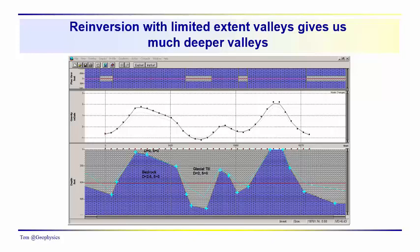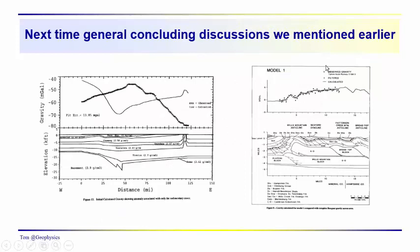And this is just an illustration of that process. So at this point and next time, we'll pretty much conclude our discussions of gravity. We'll talk about some interpretations and we'll show some example models and talk a little bit about the modeling process and the range of gravity anomalies that we've seen. So this will be kind of a concluding discussion. Thanks for joining us and we'll talk to you next time.